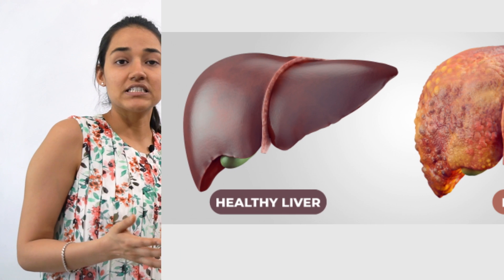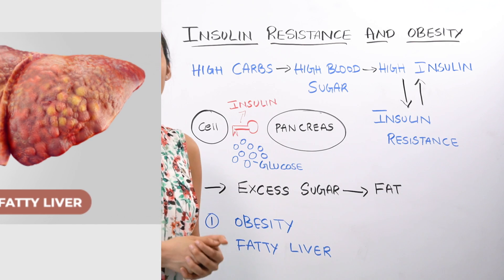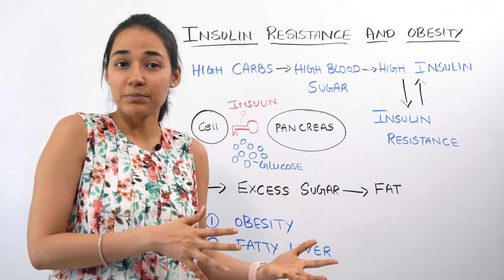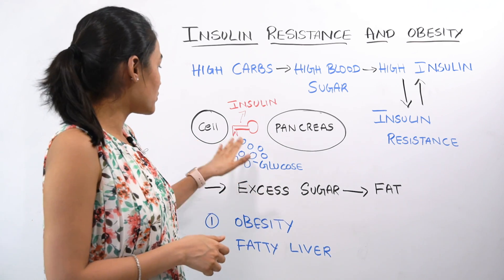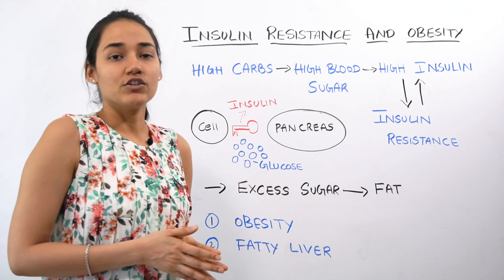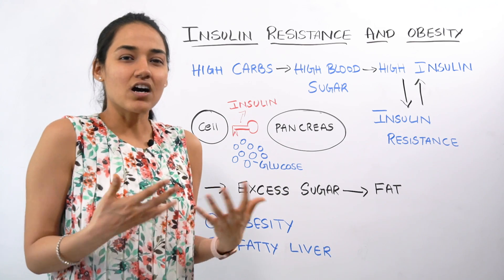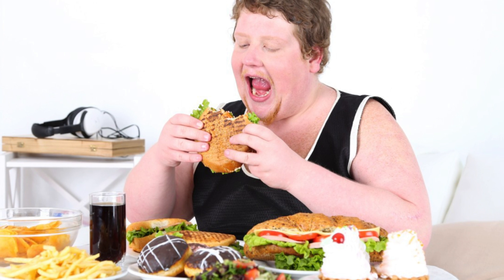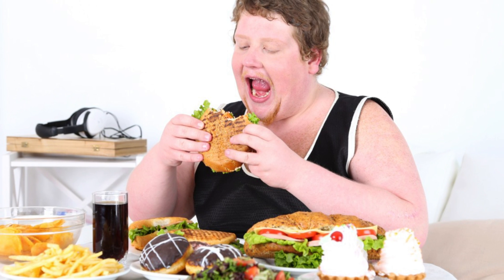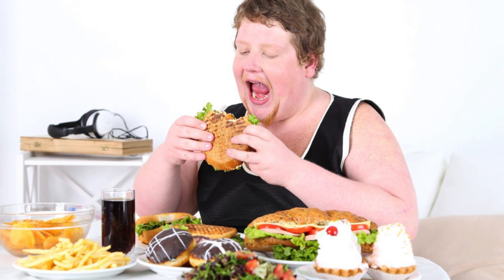Fatty liver is basically the accumulation of fat in the liver. And when you have high levels of insulin, that can also cause high blood pressure. Since the glucose does not enter your cell, you starve, you don't have energy, you feel hungry most of the time. That leads to overeating and craving for carbohydrates.